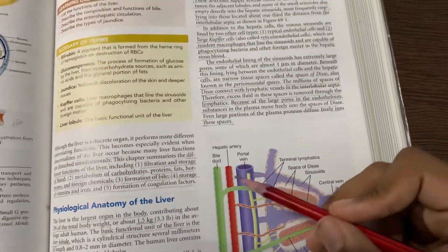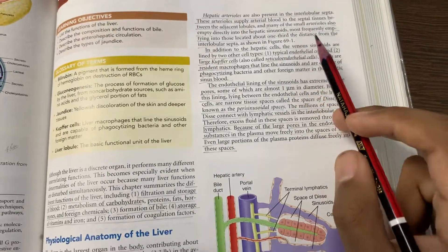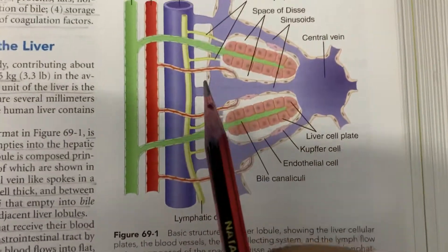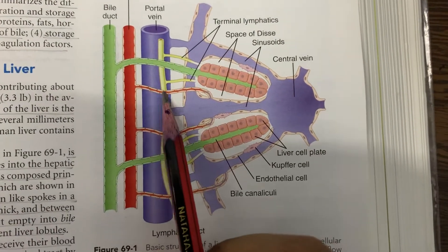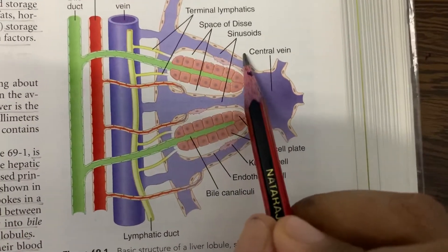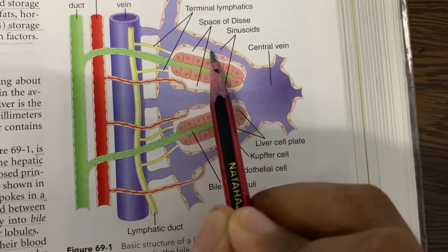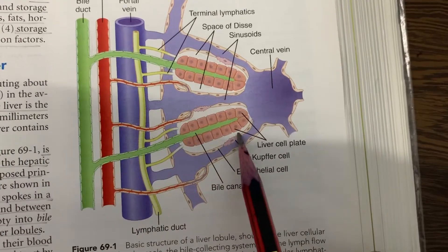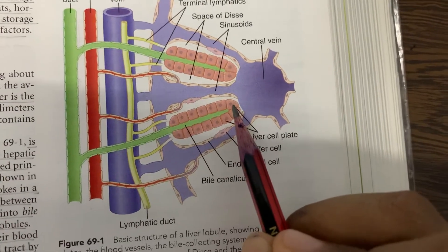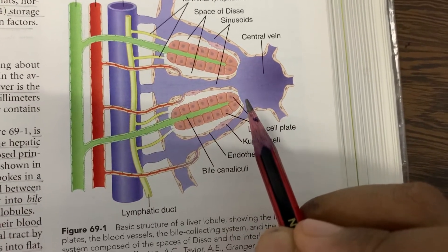Hepatic arterioles are also present in the interlobular septa. These arterioles supply arterial blood to the septal tissues between the adjacent lobules, and many of the small arterioles also empty directly into the hepatic sinusoids, most frequently emptying into those located about one third of the distance from the interlobular septa. In addition to hepatic cells, the venous sinusoids are lined by two other cell types: typical endothelial cells, and large Kupffer cells, also called reticular endothelial cells, which are resident macrophages capable of phagocytosing bacteria and other foreign material in the hepatic sinus blood.